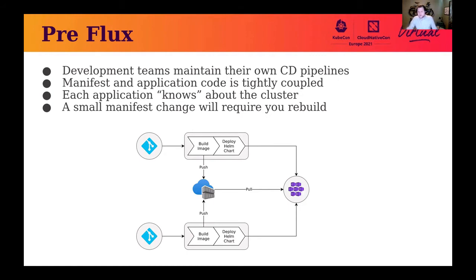It would also require each application or at least their CD pipeline to know about the cluster. Any changes to the cluster or if you wanted to replace the cluster would require you to go into each and every application and update them to point them towards a different cluster. Any small manifest change would, first of all, require you to rebuild the whole image as adding custom logic to detect manifest changes and skipping the build was complex.